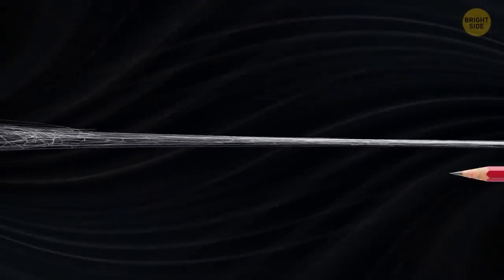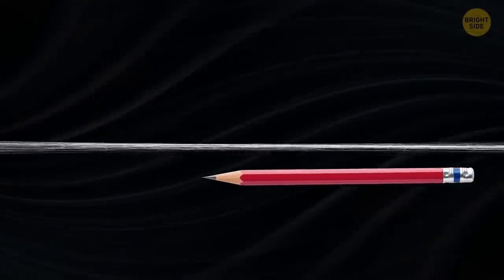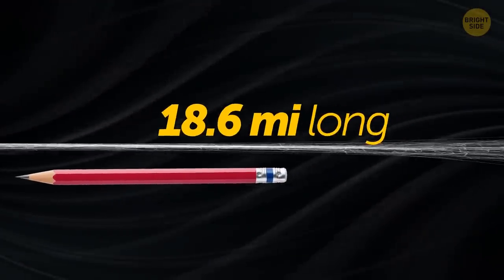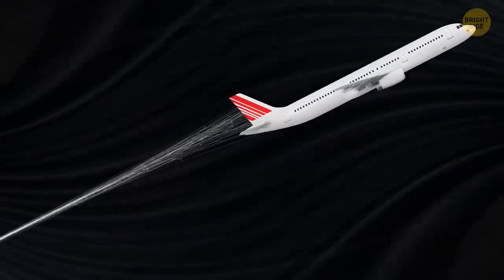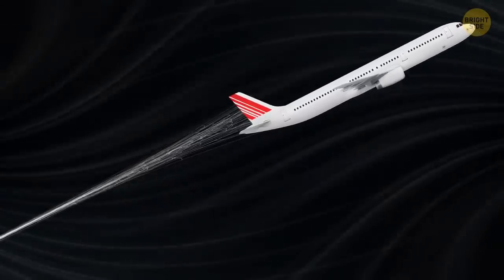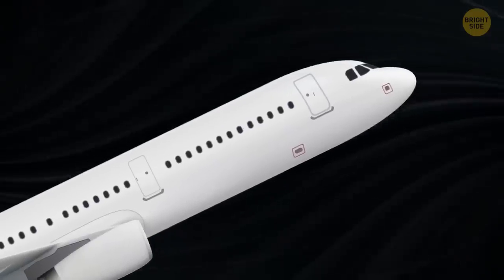Scientists believe that if we could make dragline silk, for instance, as thick as a pencil and 18.6 miles long, we would have material so strong, we could stop a jetliner in the middle of the flight. But the passengers probably wouldn't like it.